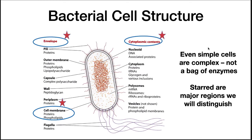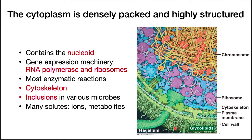Now we begin our exploration of bacterial cell structure in detail. We will begin with the cytoplasmic region and move out to the cell membrane and finally the cell envelope. Remember, even simple cells such as bacteria are complex and highly organized — they are not big bags of enzymes. The cytoplasm is densely packed and highly structured. The cytoplasm contains the nucleoid, the gene expression machinery, most enzymatic reactions, the cytoskeleton, inclusions, and many solutes. All of these come together to serve the cell's needs and are really tightly packed together.